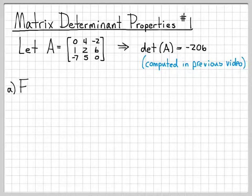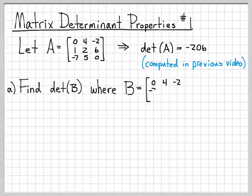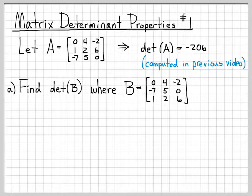What we're going to do in this example is compute the determinant of B, where B is the matrix with first row 0, 4, negative 2; second row negative 7, 5, 0; and third row 1, 2, 6. So this is the 3 by 3 matrix B that we're going to compute the determinant of.